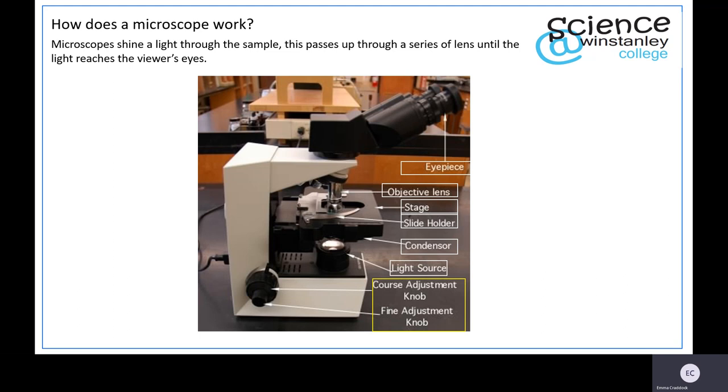If your object looks blurry, you can focus the microscope using the coarse adjustment knob which moves the stage up and down, and then use the fine adjustment knob to focus it so you can see it in minute detail.